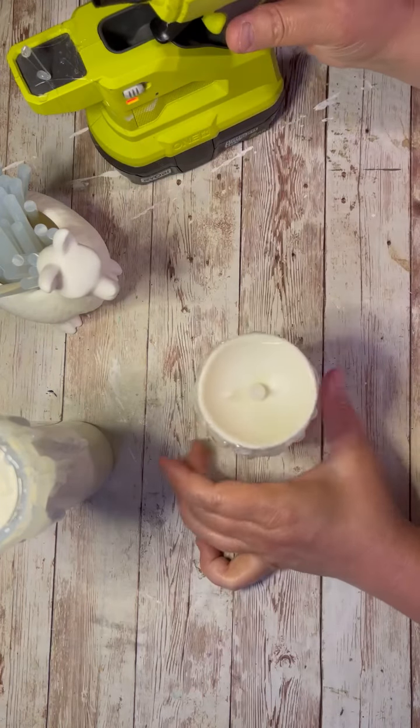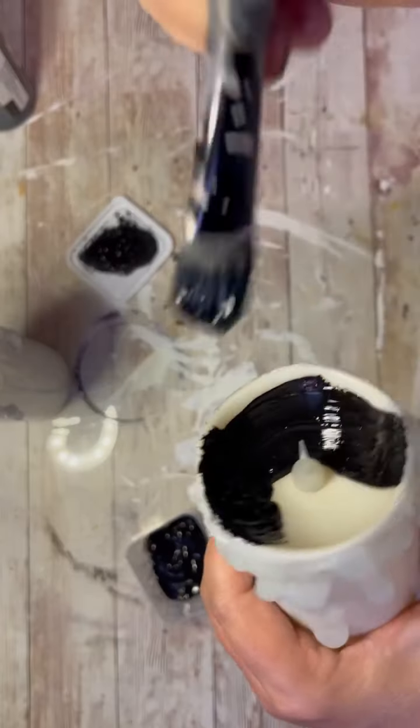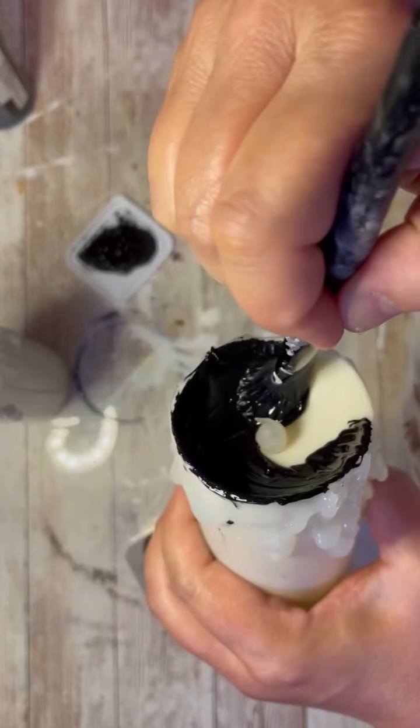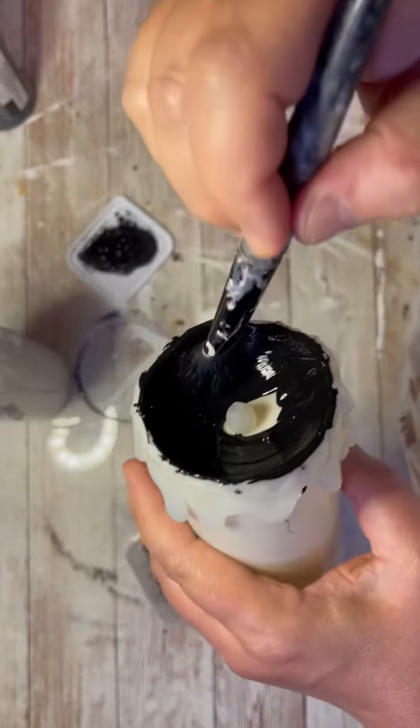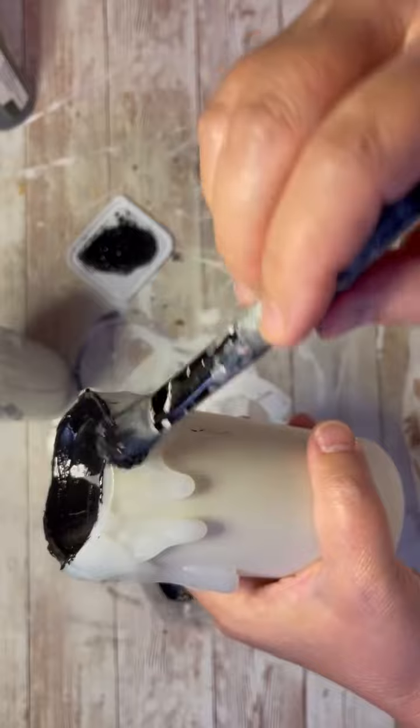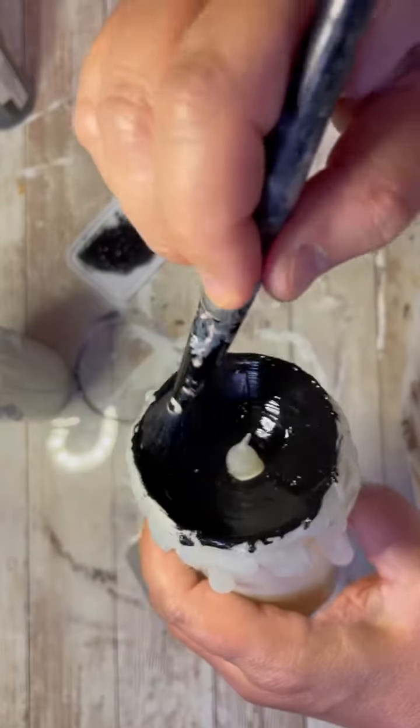So then once I was done with that, let it dry so that it hardens up. And then I took... This is just chalk all-purpose paint. It's black. And I'm going around the inside to make sure that I'm trying to be careful not to get the candle wick part. So I'm just going on the inside. And then I'm going around the outside.